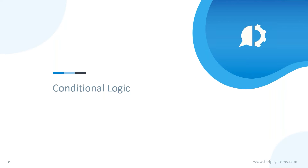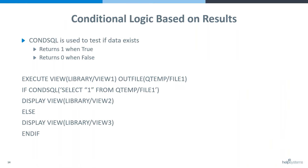We have two different examples for conditional logic. The first one is an example where we want to do something different based upon the number of records that are retrieved.